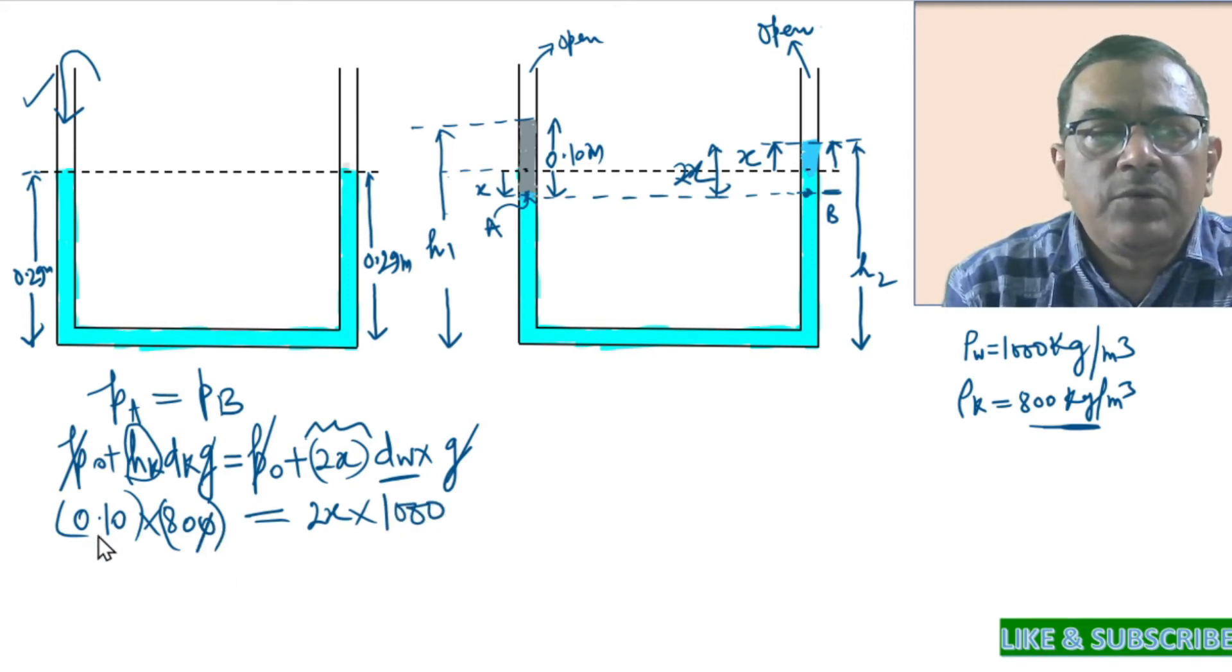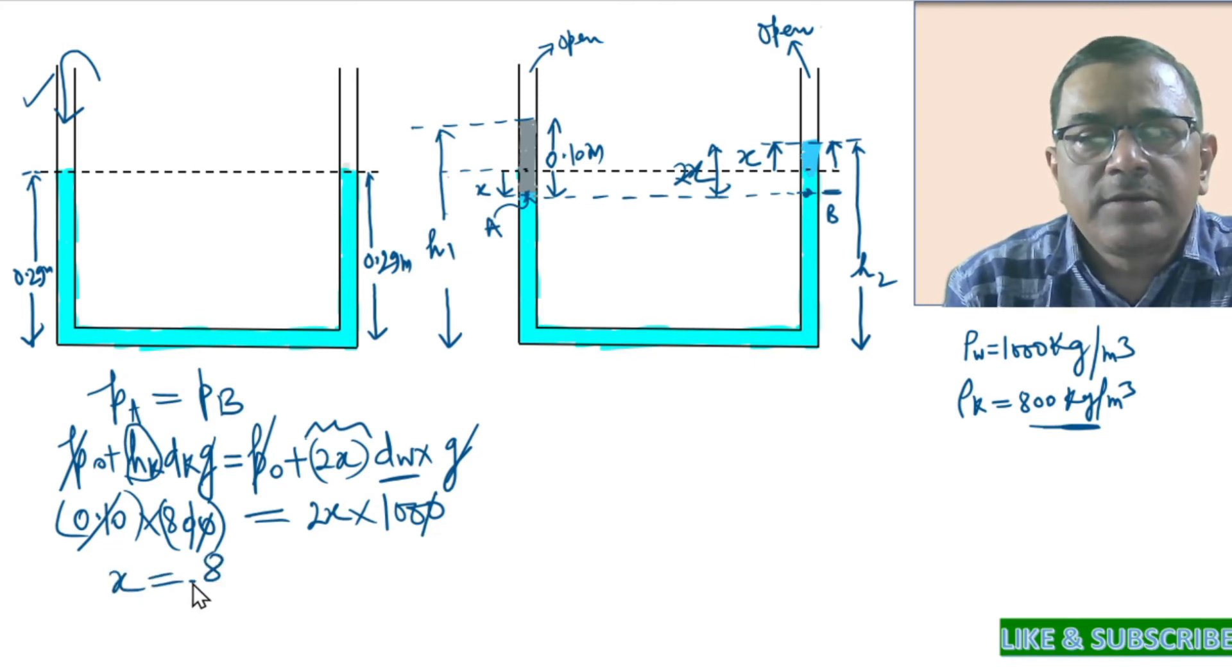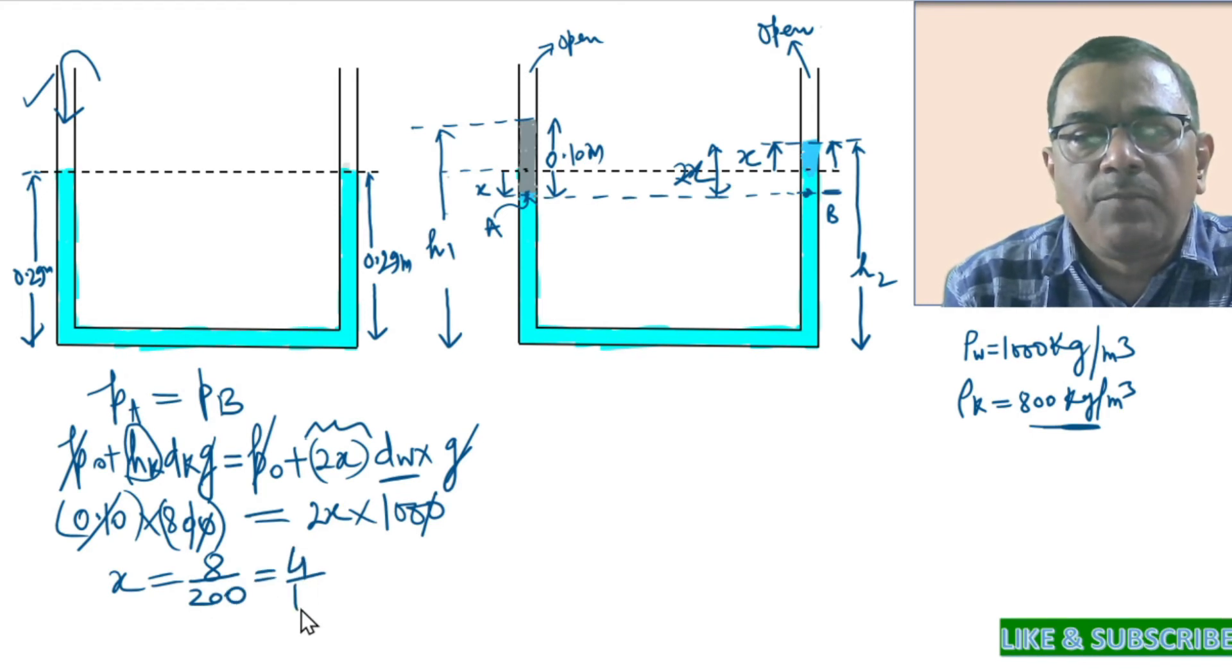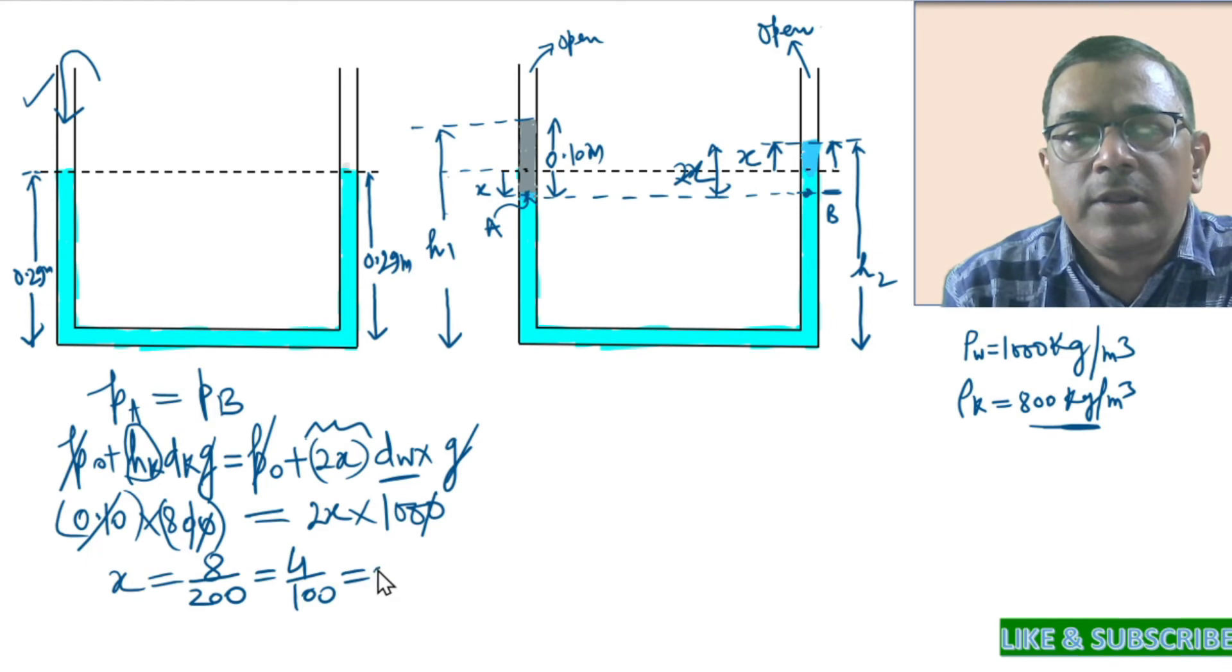Now next, the zeros and decimals will simplify. The value of X equals 8 by 200, or 4 by 100 meters, or 0.04 meters.